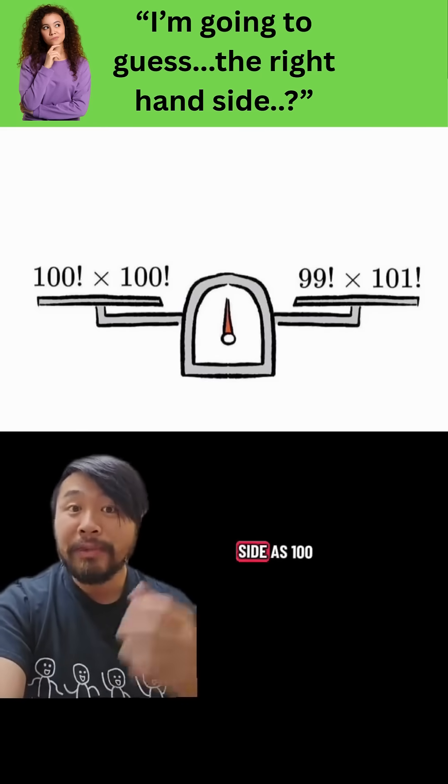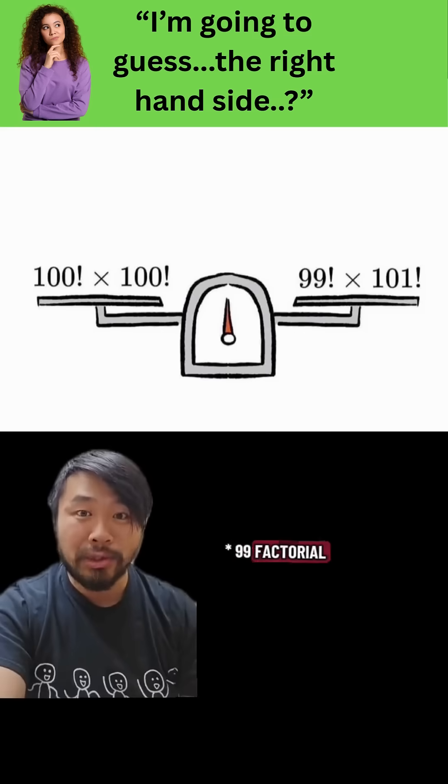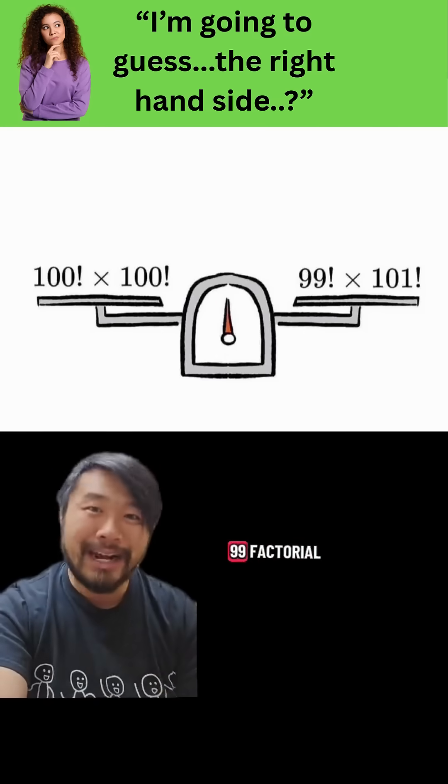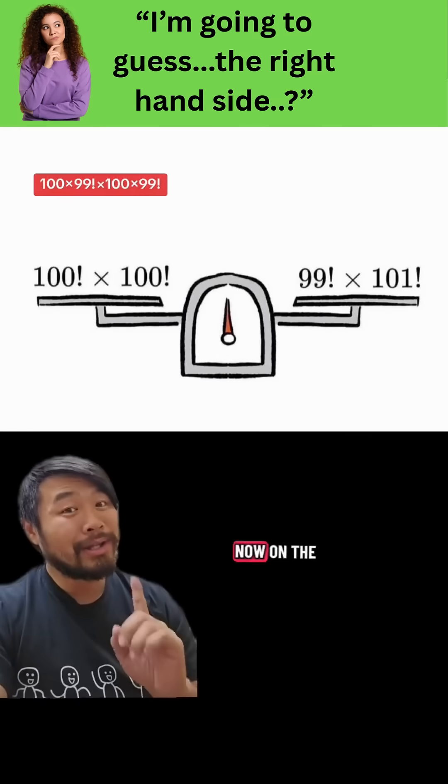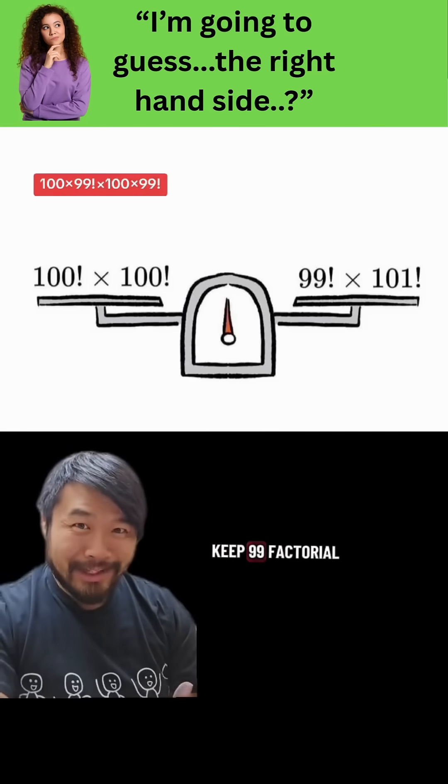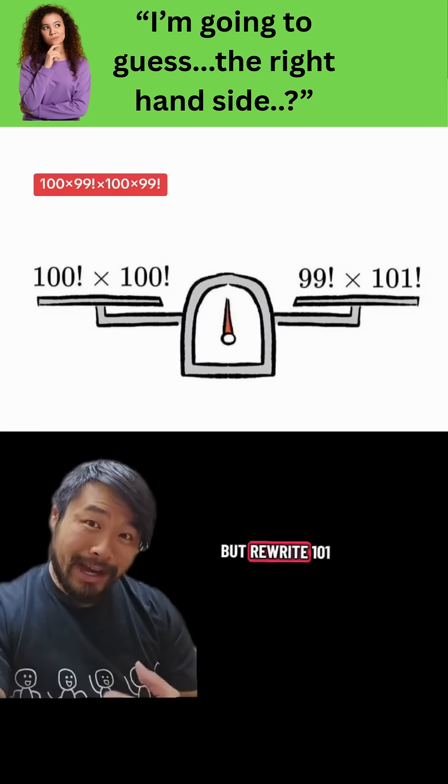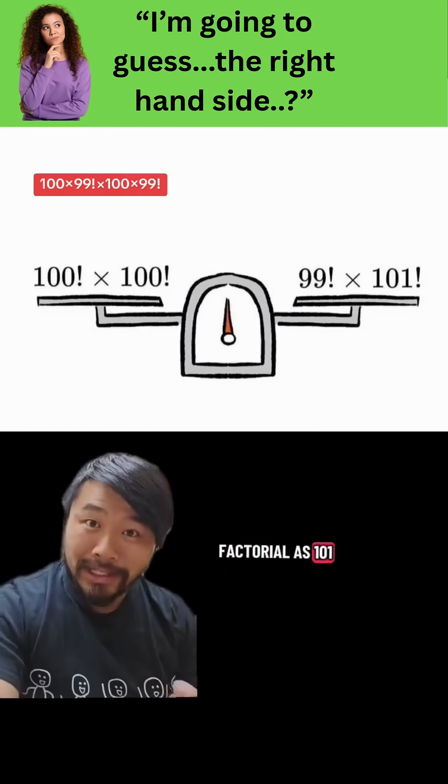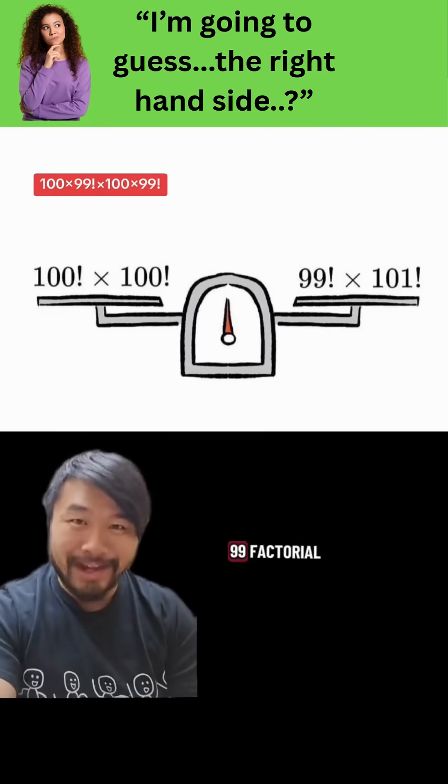So we can rewrite the left side as 100 times 99 factorial times 100 times 99 factorial. Now on the right side, let's keep 99 factorial as is, but rewrite 101 factorial as 101 times 100 times 99 factorial.